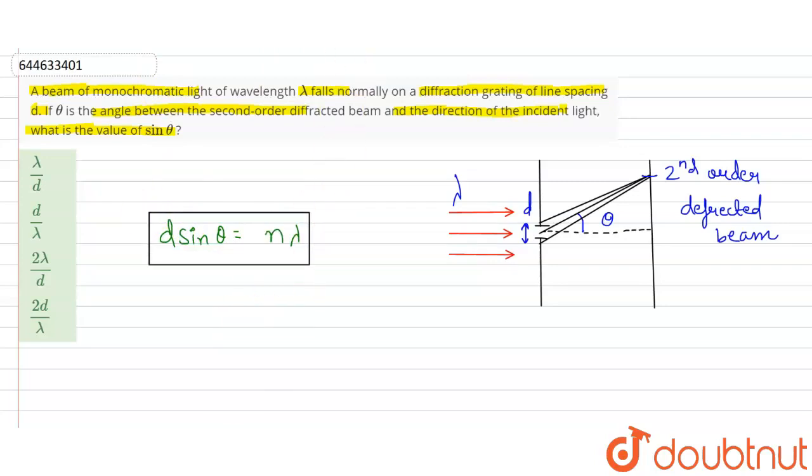So in this case our n is given to us, that is 2. So if we put the value of n equals 2, then our sin theta is equal to 2 lambda by d.